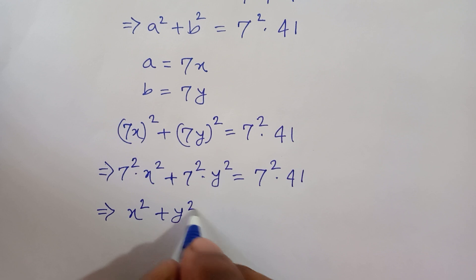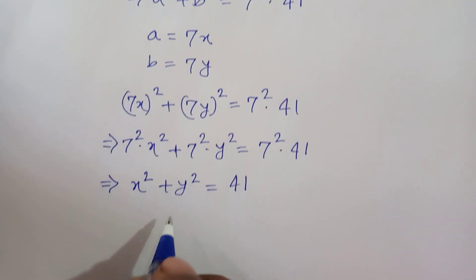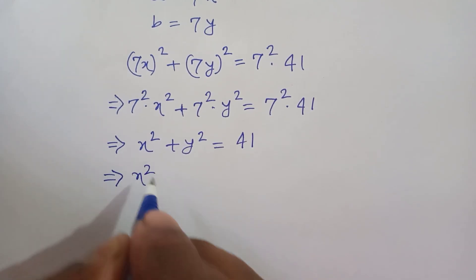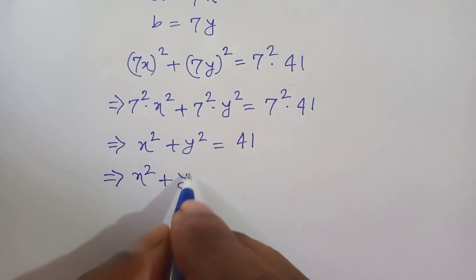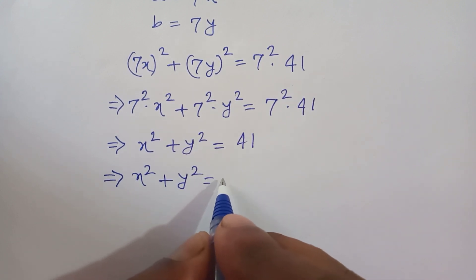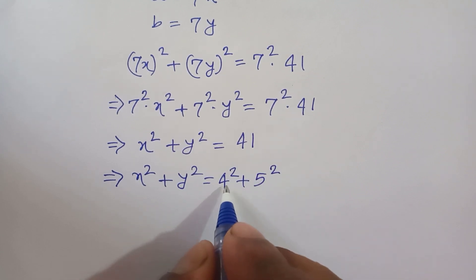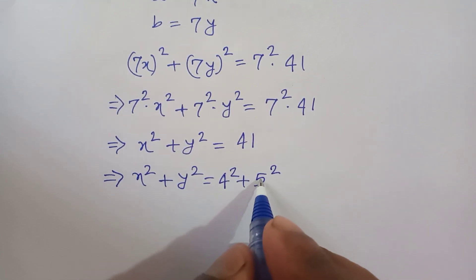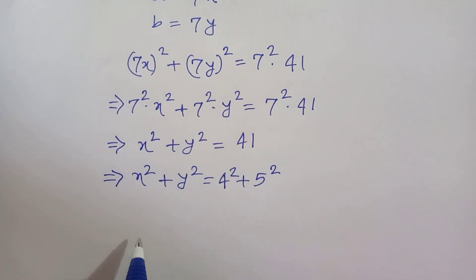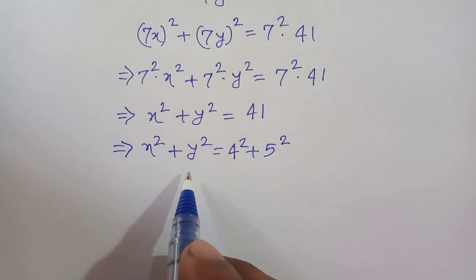41 can be written as 4² plus 5²: 4 squared is 16, 5 squared is 25, and 16 plus 25 equals 41. Now comparing this equation: